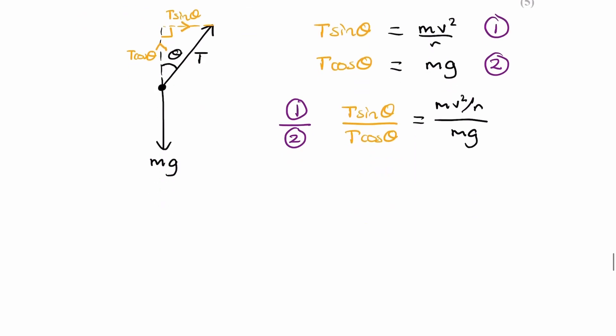The left-hand side, the T's cancel, sin over cos is tan. The right-hand side will simplify to v squared over rg.